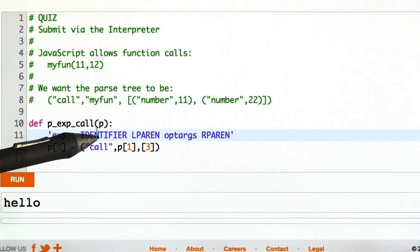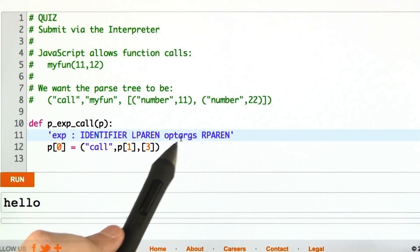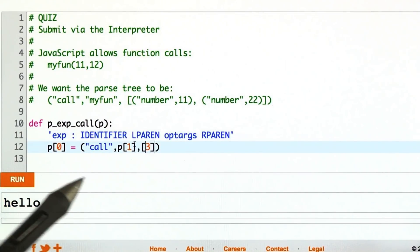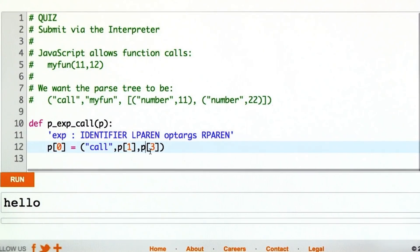And we just build up our parse tree out of a tuple, the word call, the identifier, that's position 1, 0, 1, 2, 3, 4. And the optional arguments are position 3. I definitely need the P there. There we go.